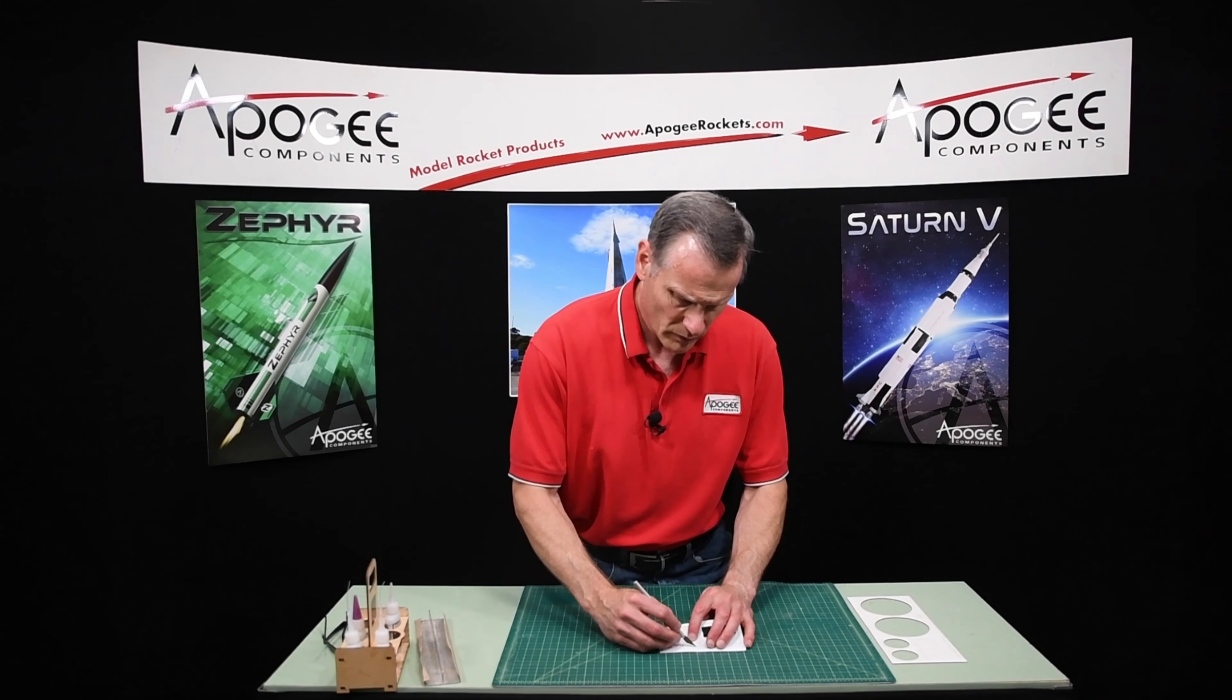And this helps stiffen these up. That's all that piece is for on the back. Now any that hangs over the edge will need to sand off. So once the glue is dry, go ahead and sand that off so that it's flush with the vacuform piece. And go ahead and do this for all of the antenna panels.